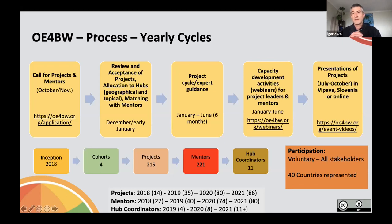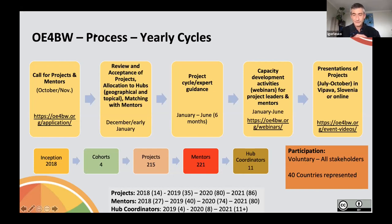Concurrently with the January to June project period, we also have additional capacity development activities in the form of webinars, both for project leaders and for mentors. You can see those links on the slide — I'll share them after the presentation in the Google document. Each year, the program culminates with a final event during which project leaders present their outputs, get additional feedback, and participate in further training opportunities. This happens in the July to October timeframe, either in-person in Vipava, Slovenia, or online.